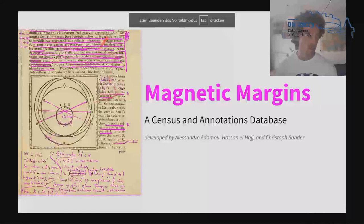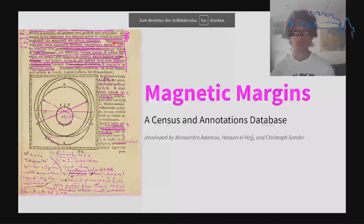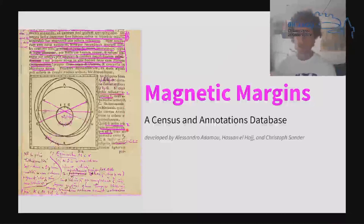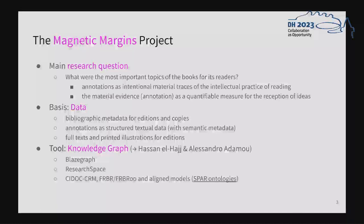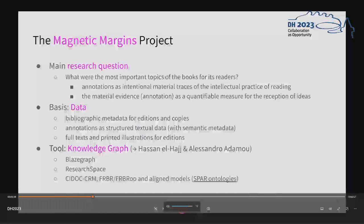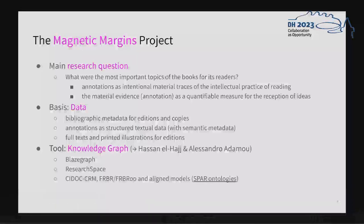By annotations I mean all these things, for example, that I've highlighted here in pink, that have been edited by a later reader. When I started this project roughly two years ago, the leading question was what are the hot topics, the topics that got annotated the most in these books. Annotations I understand as traces of interest into topics that are manifested in the printed text. By recording and counting this material evidence, we can measure the reception of ideas.